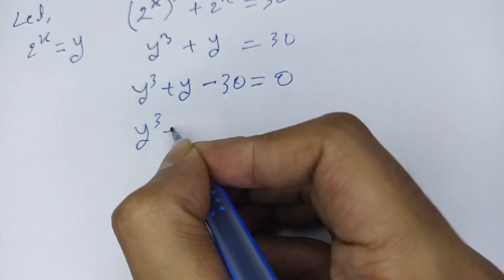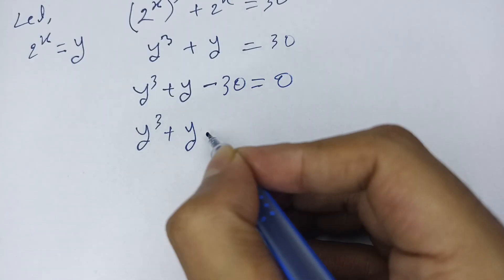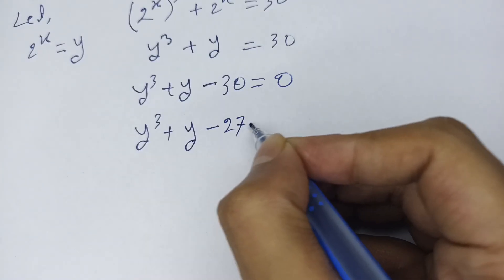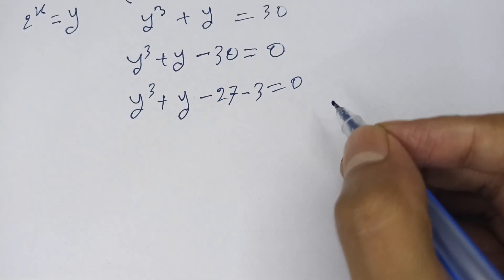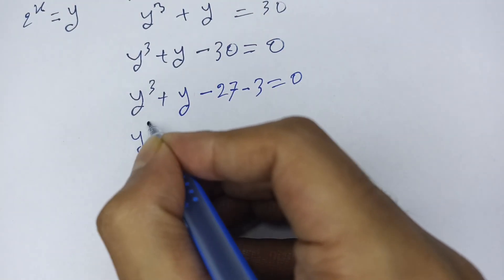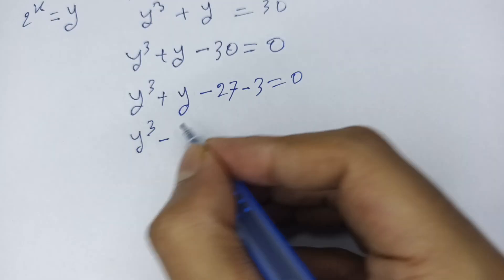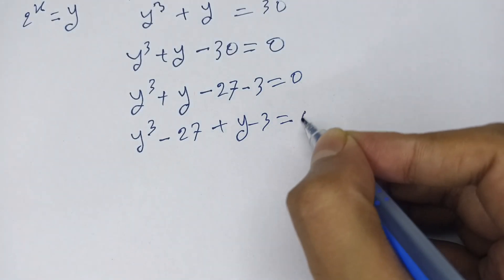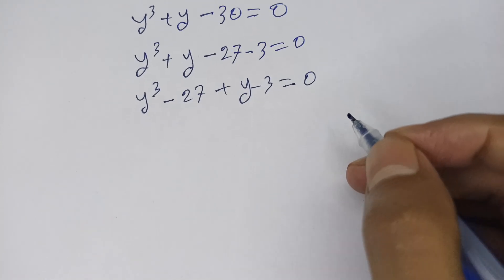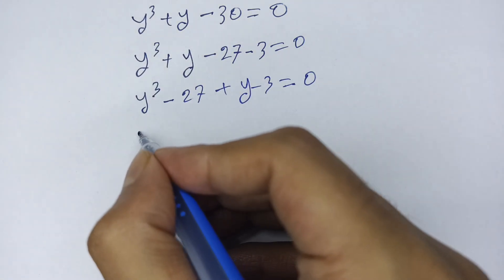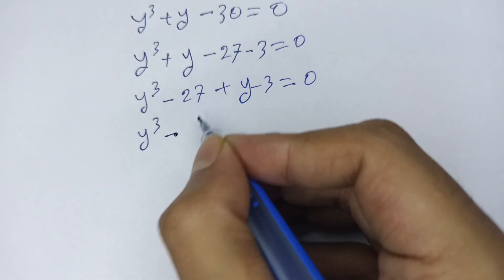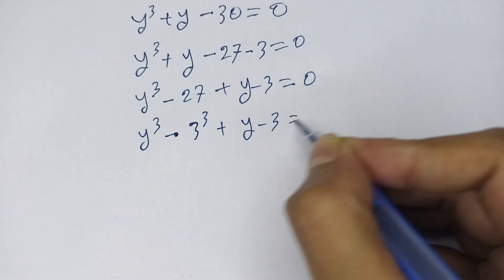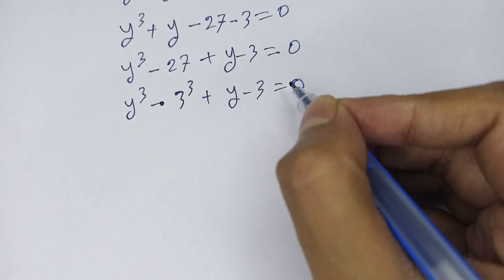Then y cubed plus y minus 30, I can write it as 27 minus 3 equals 0. Then y cubed minus 27 plus y minus 3 equals 0. Then y cubed minus 27, I can write it as 3 cubed, plus y minus 3 equals 0.